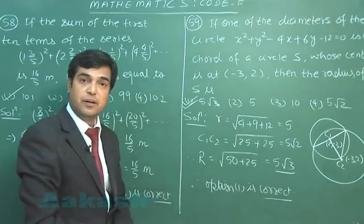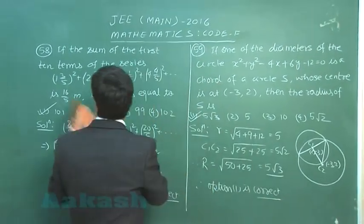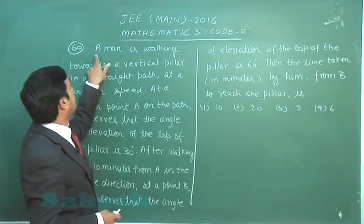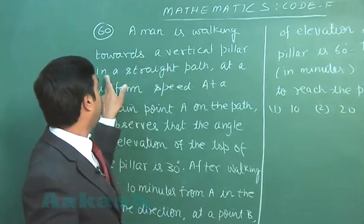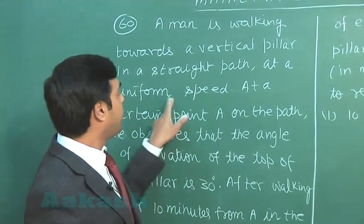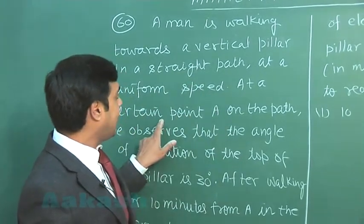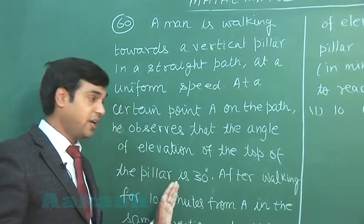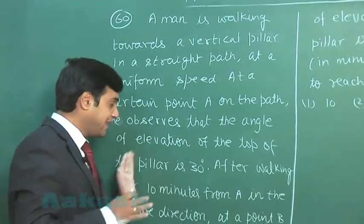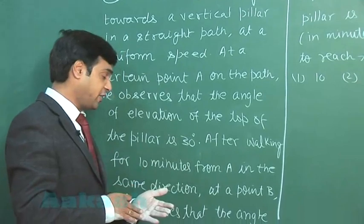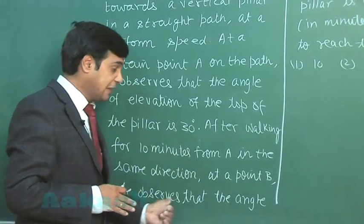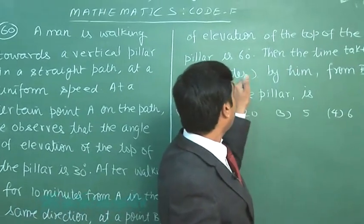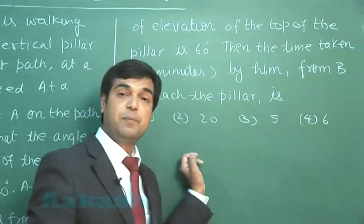So this point is clear. Let us move to the next one, the last. A man is walking towards a vertical pillar in a straight path at a uniform speed. At a certain point A on the path, he observes that the angle of elevation of the top of the pillar is 30 degrees. After walking for 10 minutes from A in the same direction at a point B, he observes that the angle of elevation of the top of the pillar is now 60 degrees. Then the time taken by him in minutes from B to reach the pillar is.